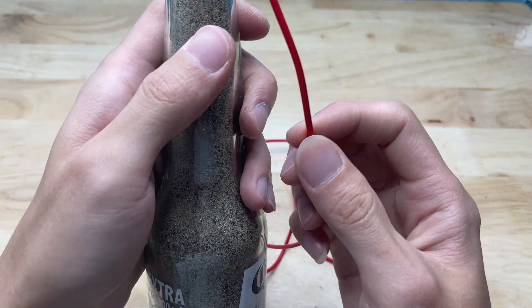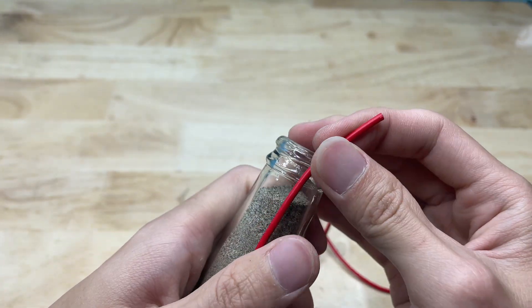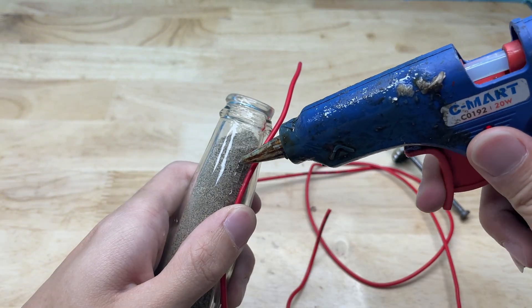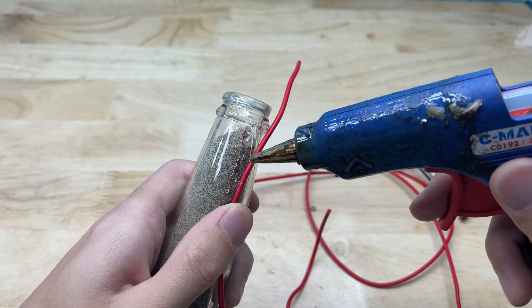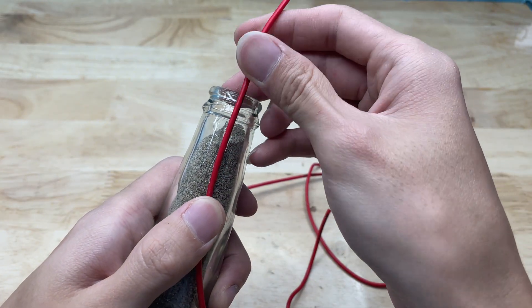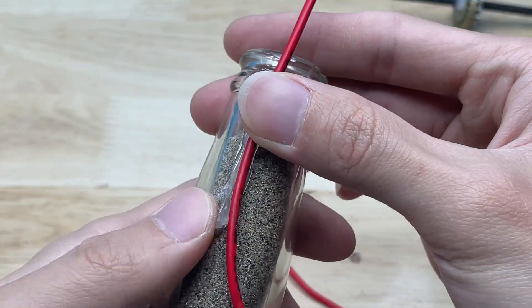Next, I will prepare a length of electrical wire of suitable size and secure it along the body of the glass bottle using hot glue. The glue is applied evenly and pressed firmly, so the wire adheres tightly to the bottle surface, preventing it from shifting during handling or operation.